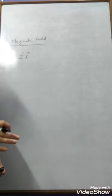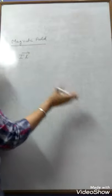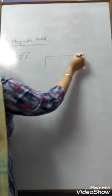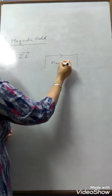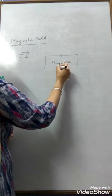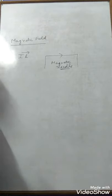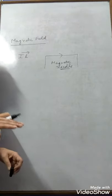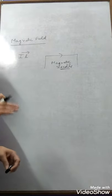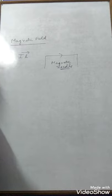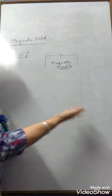It was first given by Oersted that a current-carrying conductor produces a magnetic field around it. According to his experiment, when a current-carrying wire is placed and a magnetic needle is placed near it, the deflection of the needle gives proof of the presence of a magnetic field around that wire. This is Oersted's experiment.